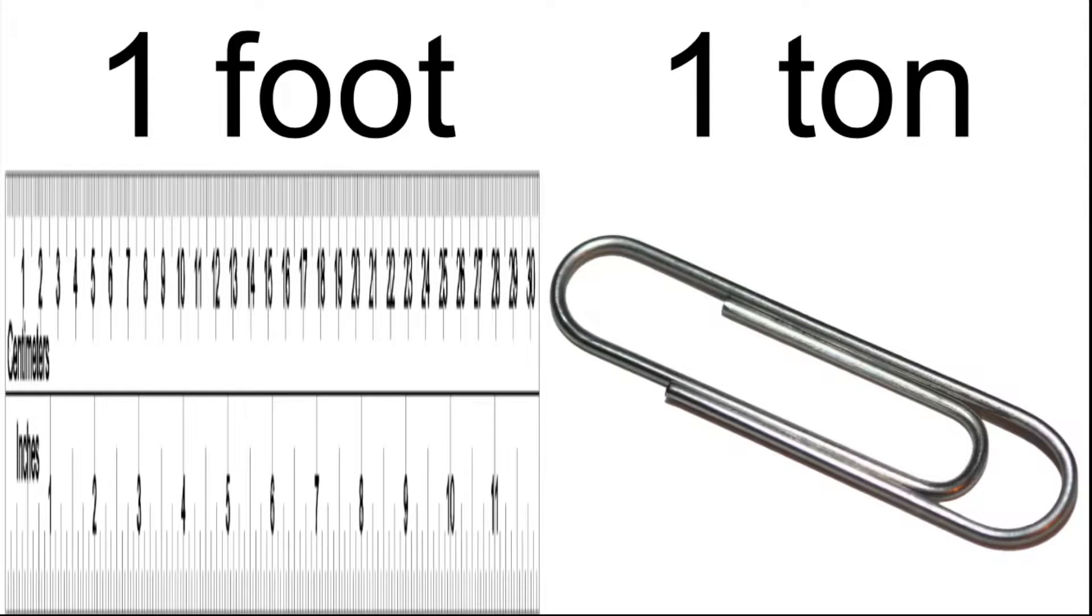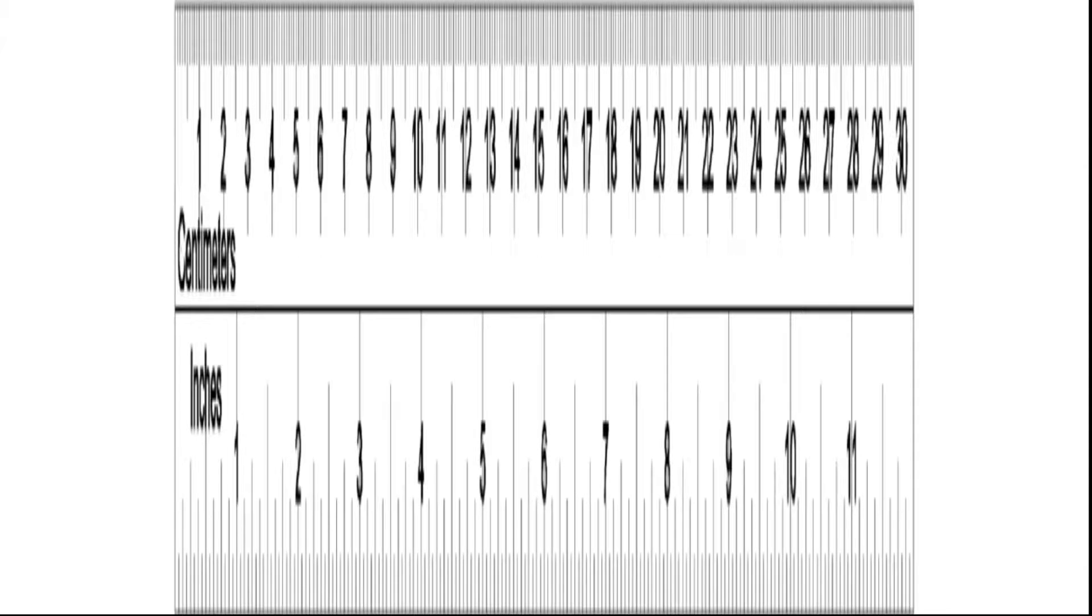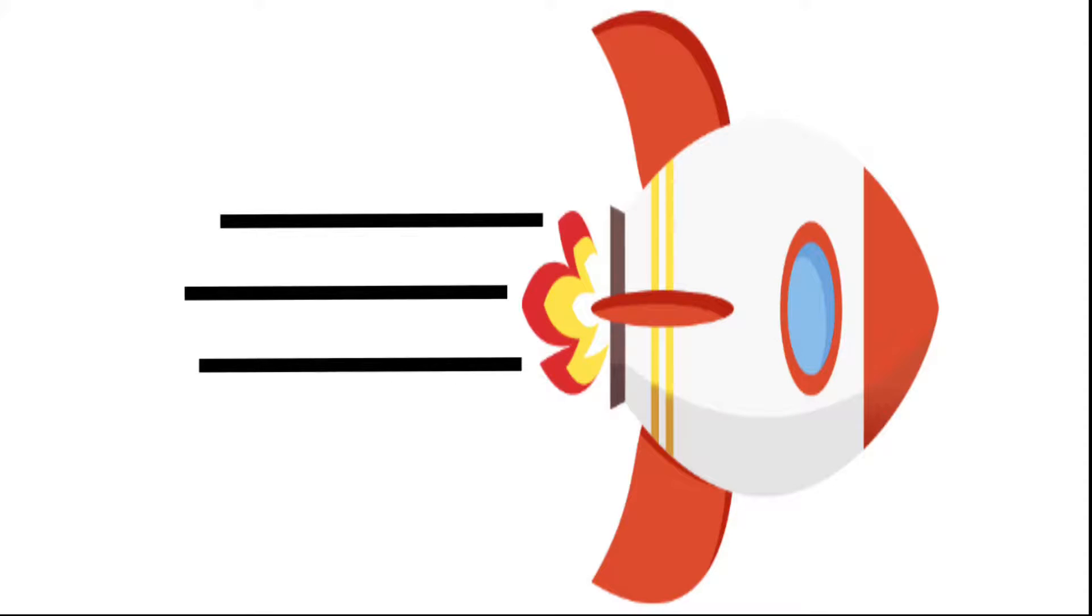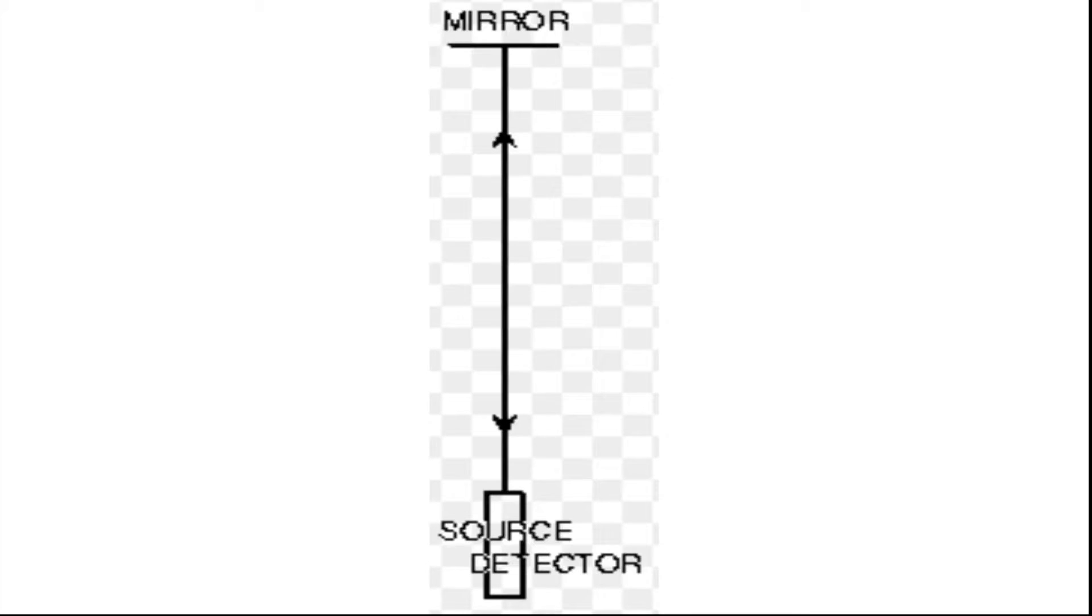First is length contraction. Length contraction is when fast-moving objects are shortened along the direction of motion, like this rocket. There's something I need to explain before I tell you the reason this occurs: the concept of a light clock.